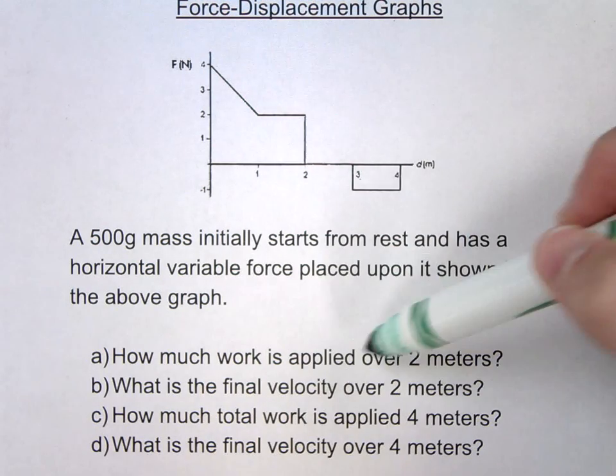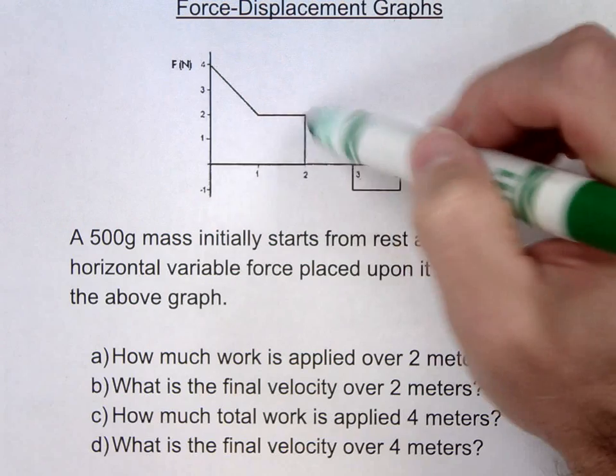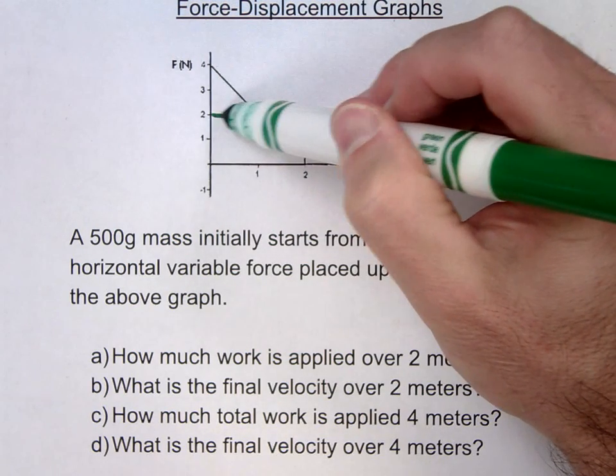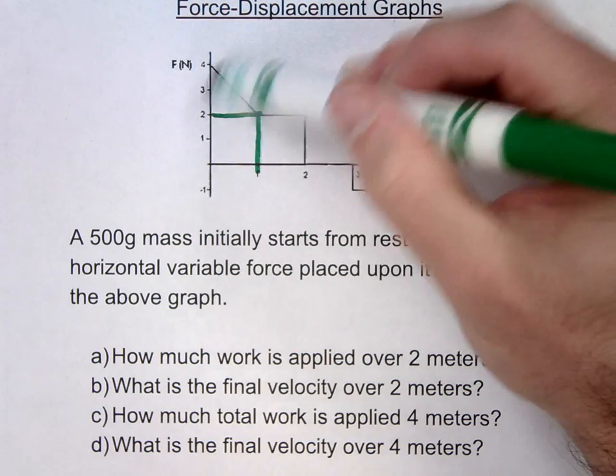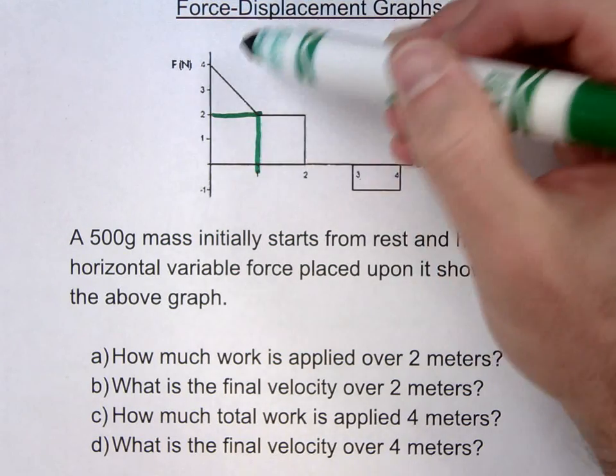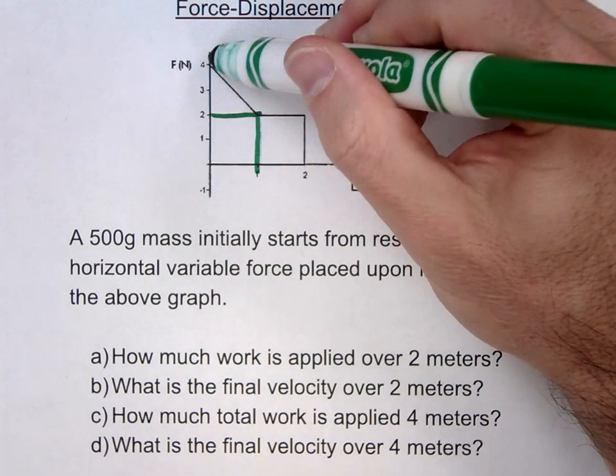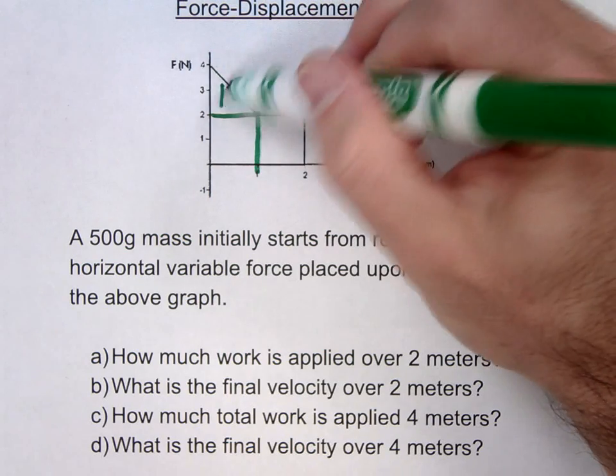So the first question is saying how much work is applied over 2 meters. So we're simply going to find the area underneath up to 2 meters here. So the first region, I like to make nice and simple shapes here. You could make this a trapezoid, but let's just go ahead and say this is a triangle. So we have 1/2 times base times height. So that's going to give me 1 joule in this region.